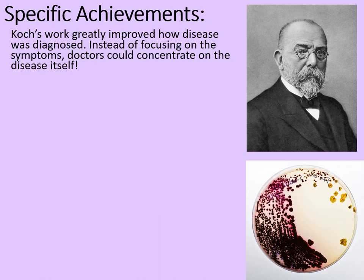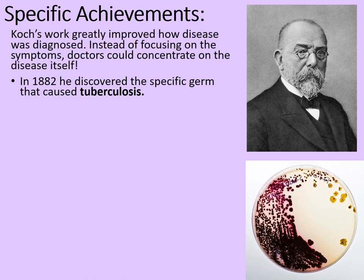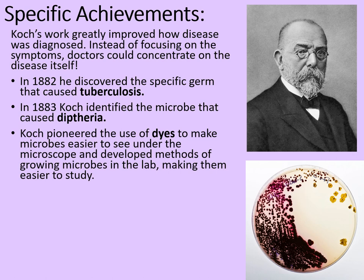So what were Robert Koch's specific achievements? Koch's work greatly improved how disease was diagnosed. Instead of focusing on the symptoms, doctors could concentrate on the disease itself. In 1882 he discovered the specific germ that caused tuberculosis. In 1883 Koch identified the microbe that caused diphtheria. Koch pioneered the use of dyes to make microbes easier to see under the microscope, and he developed methods of growing microbes in the lab, making them easier to study.